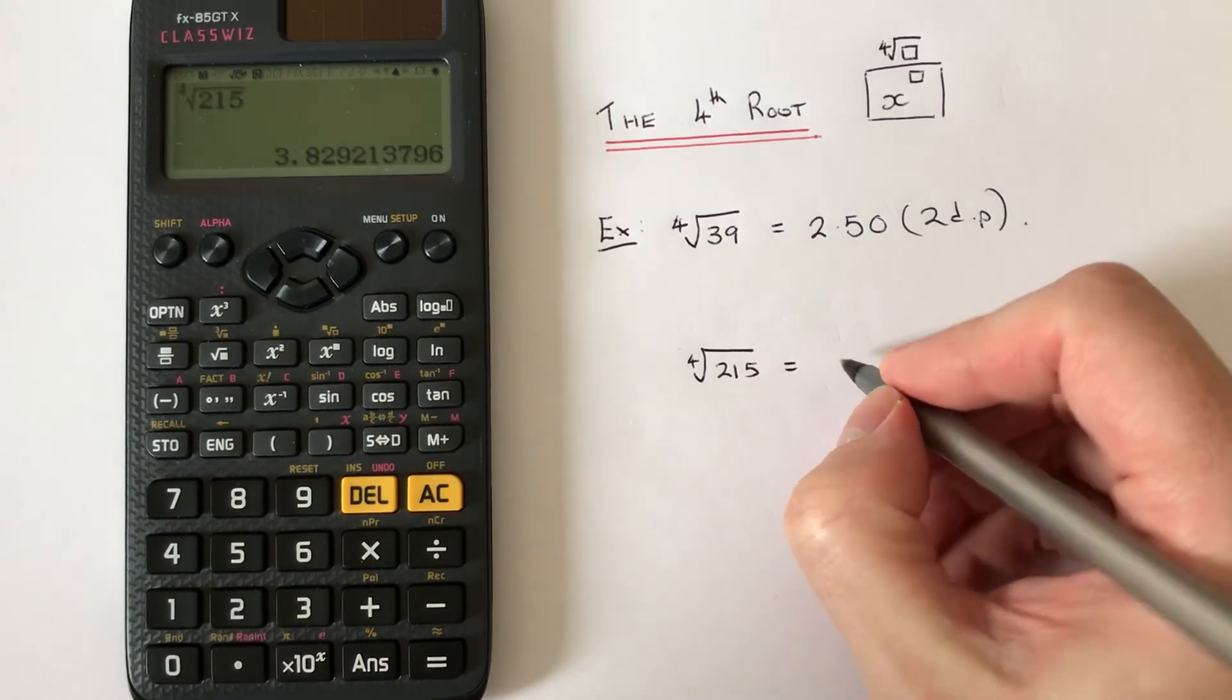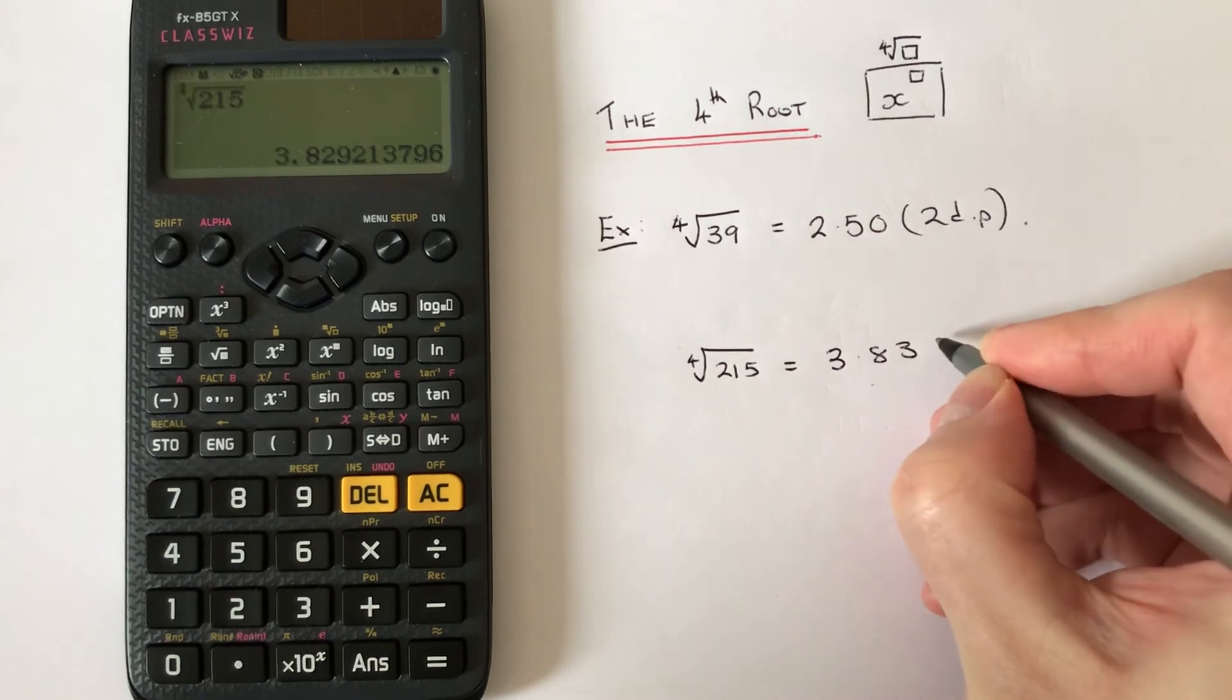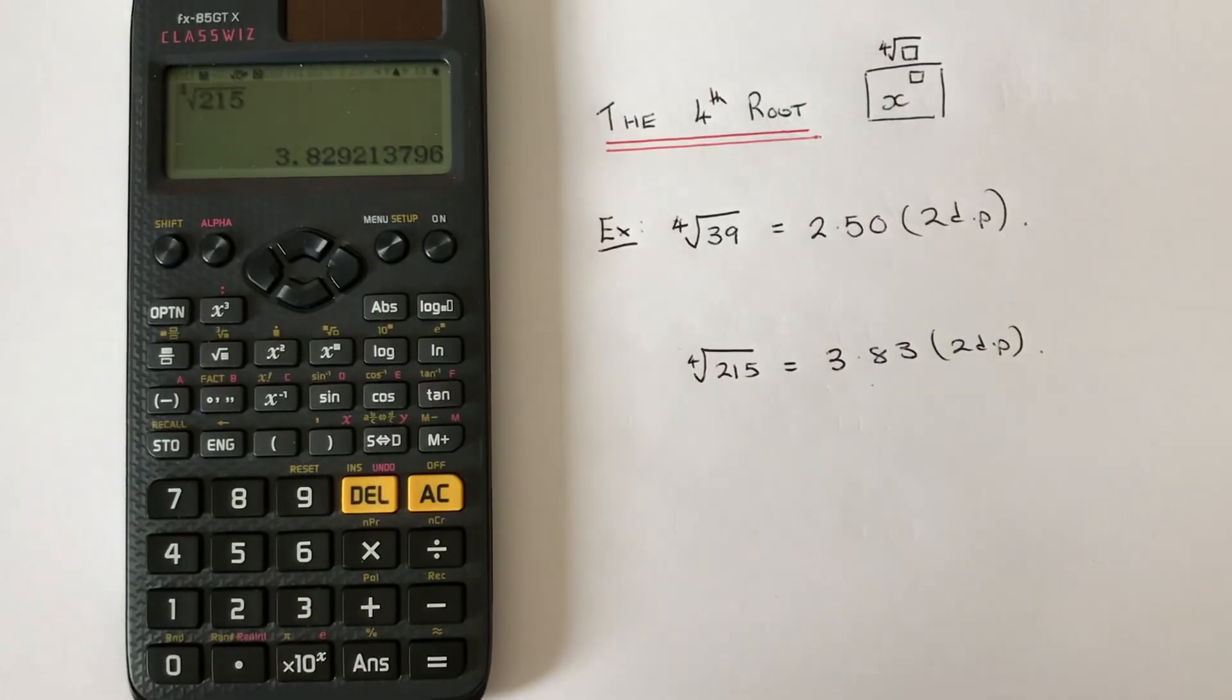Again, if we round it off to two decimal places, we get 3.83. So thanks for watching guys, see you next time.